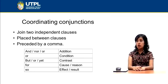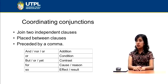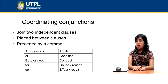Here are some examples of coordinating conjunctions. 'And,' 'nor,' and 'or' show addition. 'Or' can also show condition. 'But' and 'yet' show contrast. 'For' expresses a cause and a reason, and 'so' expresses effects and results.